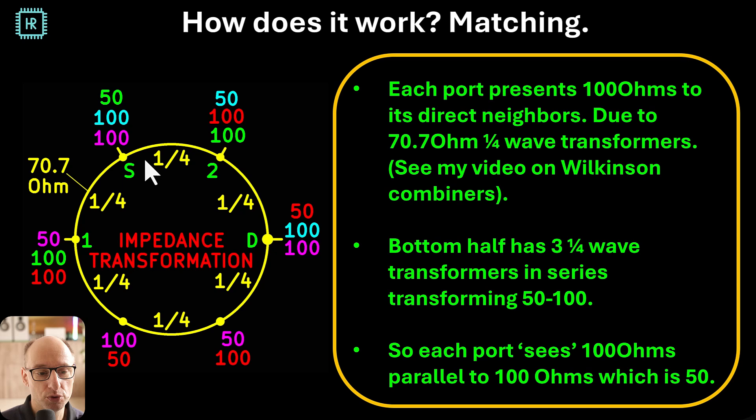So the whole idea of the matching of this ring is that each port sees 50 ohms when you look into it. What will happen due to the quarter wave transformer: if I go in here with 50 ohms, then this 50 ohm input will be transformed to 100 ohms at its neighbors, so 100 ohms here and 100 ohms here. You can see they're both green. If I go in here with light blue, I will get 100 ohms at S and 100 ohms at D. Same thing you can do for port 1 and for port D.